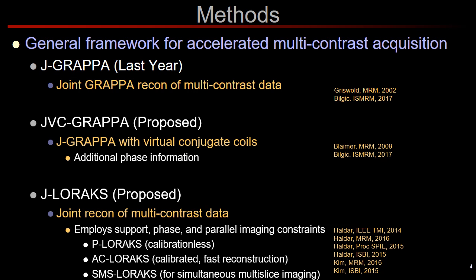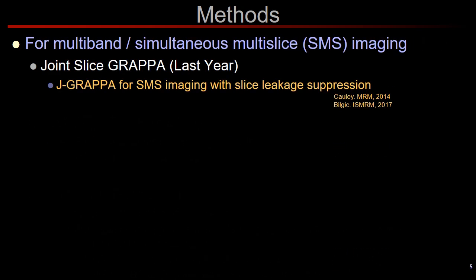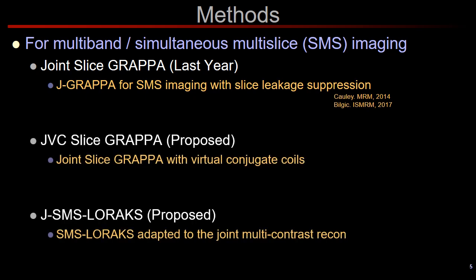J-LORAX also encapsulates P-LORAX, which allows calibration-less imaging, AC-LORAX for fast calibrated reconstruction, as well as SMS-LORAX for simultaneous multi-slice imaging. In particular, we had proposed the Joint Slice GRAPPA technique last year for multiband or SMS imaging, and in this work we have expanded it to JVC Slice GRAPPA as well as Joint SMS LORAX.